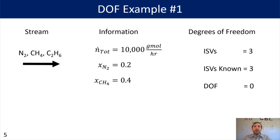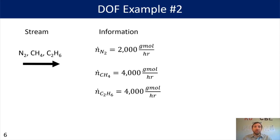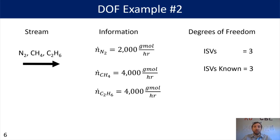For our next example we use the same stream but change up the information provided. Instead of a total molar flow rate and two mass fractions, I'll give you the molar flow rate for each species: nitrogen is 2,000 gram-moles per hour, methane is 4,000 gram-moles per hour, and ethane is 4,000 gram-moles per hour. We still have three ISVs and three independent pieces of information, so we again have zero degrees of freedom.